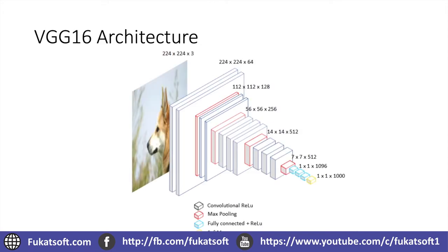Remember we talked about the VGG16 architecture. In transfer learning, we changed only the layers of the classification stage and kept all the knowledge that the network obtained when extracting features and characteristics when loading the weights of ImageNet. With fine-tuning, we are not limited to that — we can retrain also the feature extraction stage, that is the convolutional and all the pooling layers.